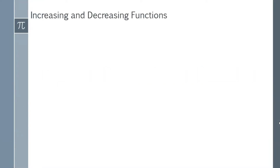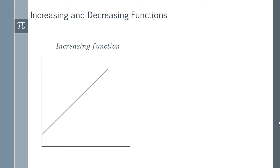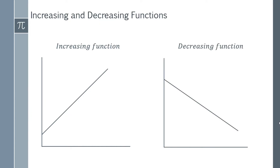Let's look at the fundamental theory that underlies increasing and decreasing functions. Where we have an increasing function, it looks very simple — the function is going up. As you increase x, y is also increasing. For a decreasing function, it's simply the opposite: as you increase x, the value of y decreases, so you can see the function is going down.